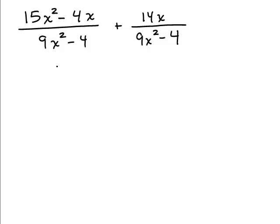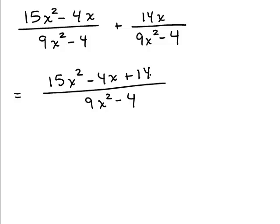Okay, let's see. First thing we want to check is that the denominator is the same. And if they are, we could write the denominator—we just write it once. And then we add the numerators. So we have 15x squared minus 4x plus 14x.